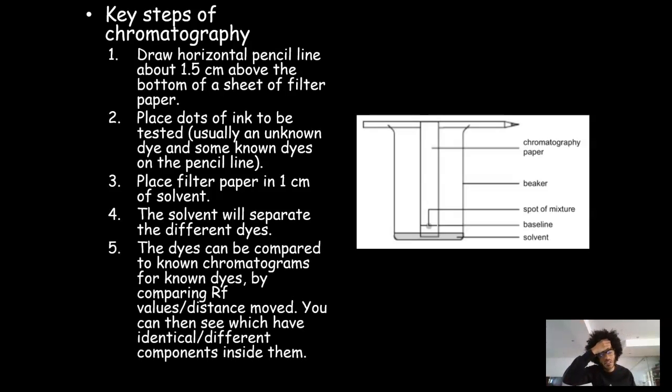And then what you have to do, and this is something which you do have to mention in your method, you have to say the dyes can be compared to known chromatograms for known dyes. And the way you do that is you calculate or compare RF values or distances moved. You can then see which have identical or different components inside them. I'll talk more about how you do those calculations or comparisons later. But the key thing for you to write down when you're writing the method is that idea that you do that comparison, either from distances moved or RF values. So that's the first bit. Those are the key steps of chromatography.